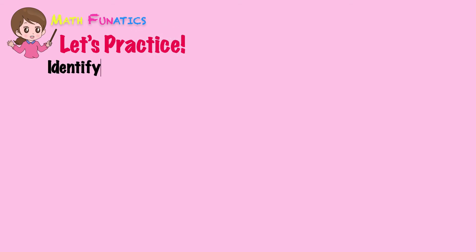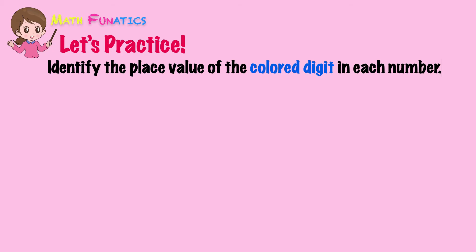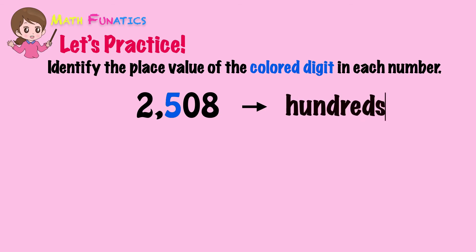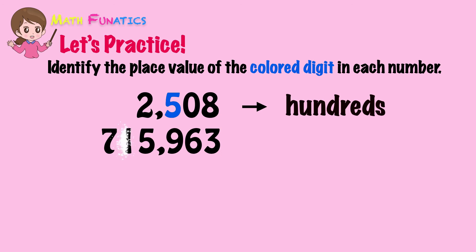Now let's practice what you've learned with these examples. Identify the place value of the colored digit in each number. The colored digit in the first number is 5 — what is its place value? Correct, it's hundreds. This time, 1 is the colored digit — what is its place value? Yes, it's ten-thousands.